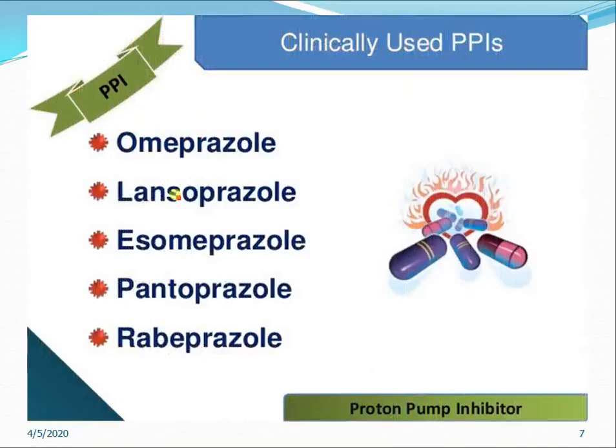Examples of proton pump inhibitors include omeprazole, lansoprazole, pantoprazole, and rabeprazole.